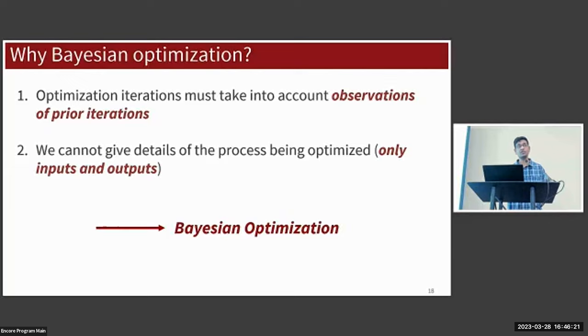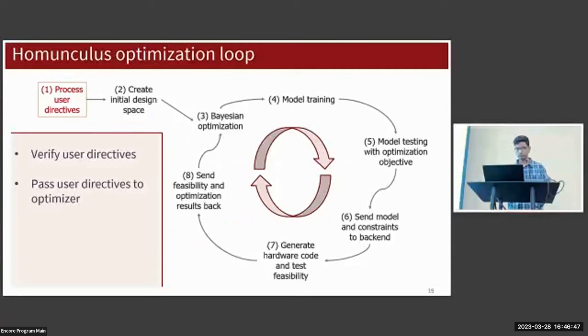Bayesian optimization fits the bill on both accounts here. Essentially what's going to happen is that Bayesian optimization will suggest ML configurations to the rest of Homunculus, and the rest of Homunculus will test these configurations and then send that information back to the Bayesian optimization process, which will take those results into account before suggesting further ML configurations.